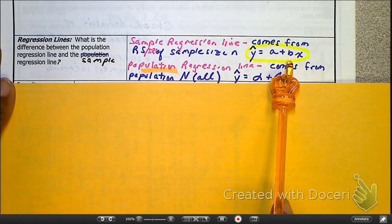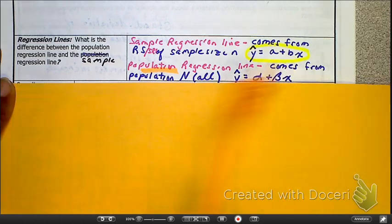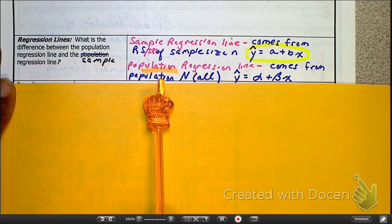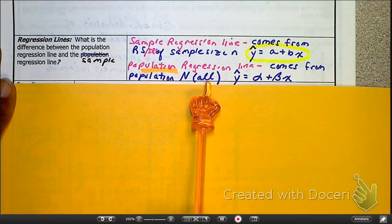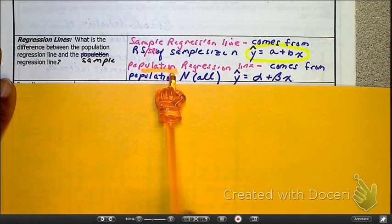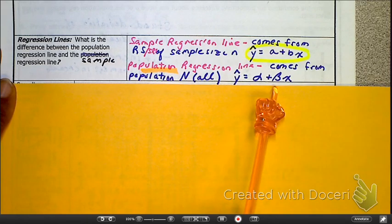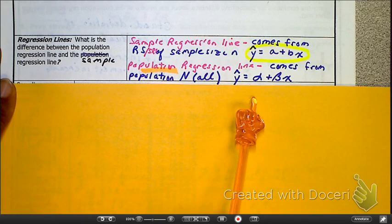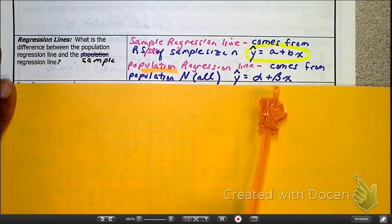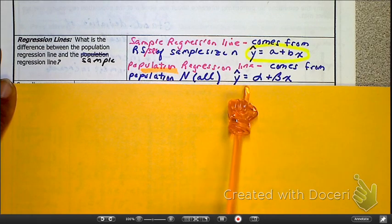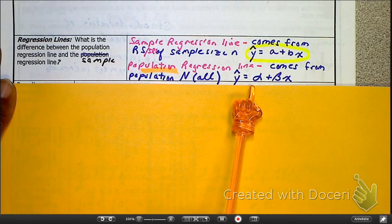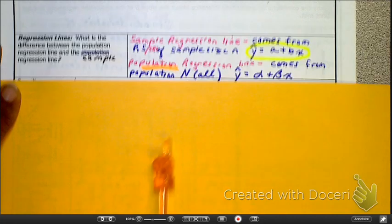Whatever the coefficient of X is, it's a slope. When it's the population regression, they go Greek. So here's your slope — beta. And here is your Y-intercept — alpha.